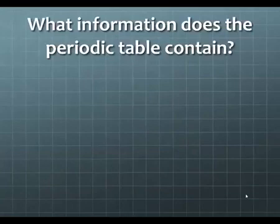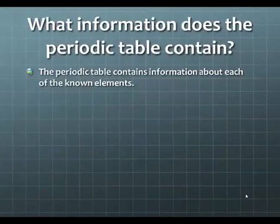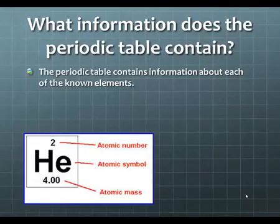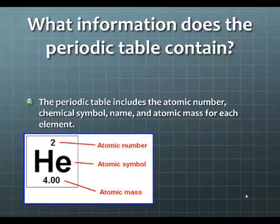What information does the periodic table contain? The periodic table contains information about each of the known elements. It includes the atomic number, the chemical symbol or name, and the atomic mass for each element.